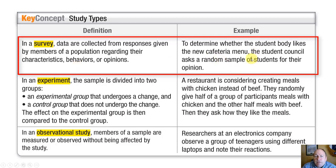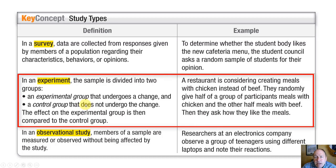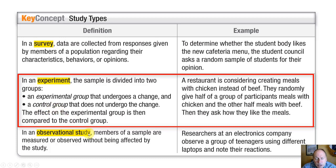An experiment is designed to measure the effects of something. To do that we have to divide a sample into two groups: an experimental group where we put the effect on them and measure that effect, and a control group that does not receive the effect, so we can statistically determine the differences between those two.